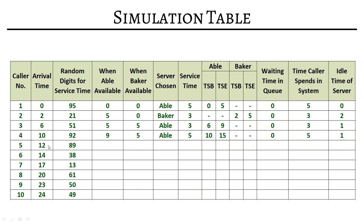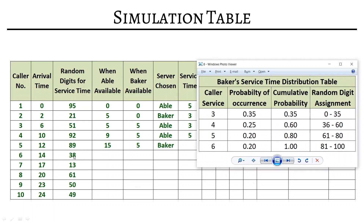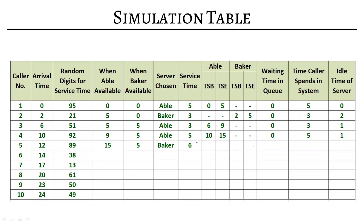The fifth caller arrives at time 12. Abel is not available until 15, but Baker is free now, so we choose Baker. Random digit 89 gives Baker a service time of 6. Abel column is dash-dash. Service begins at 12 and ends at 18. Waiting time is 0; time in system is 6. Baker was free from 5 to 12, so idle time is 7 minutes.